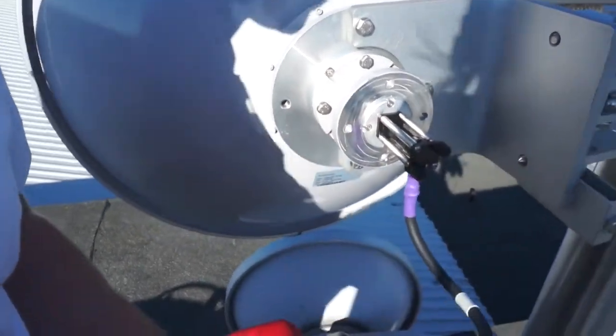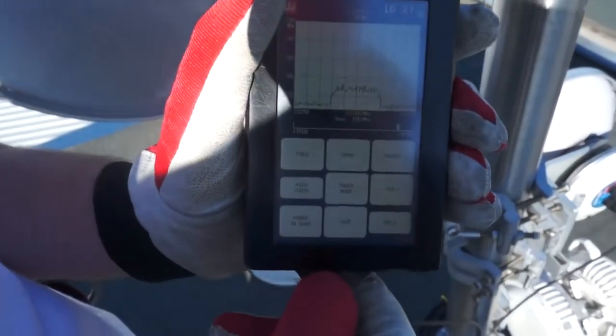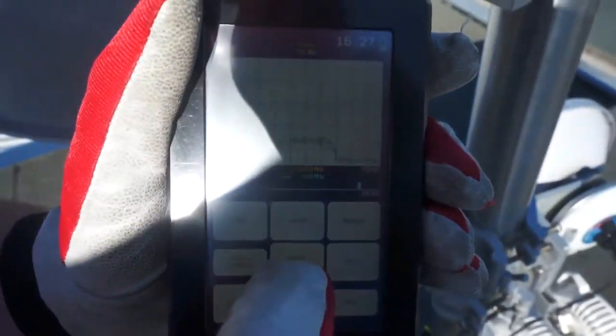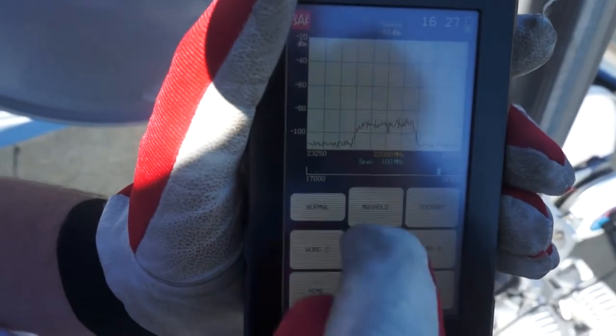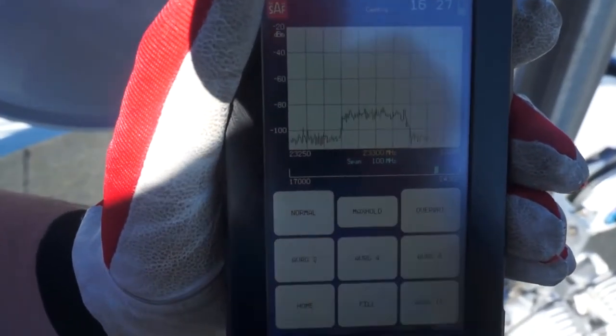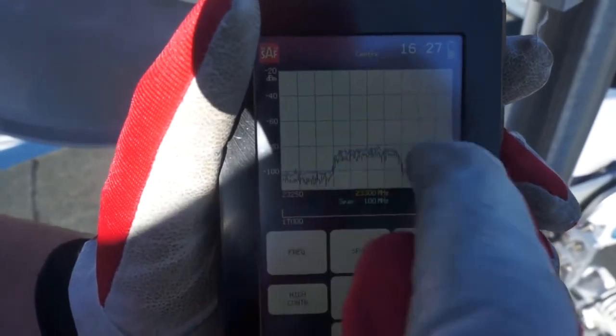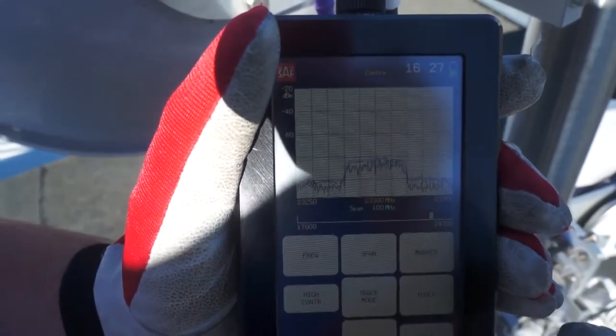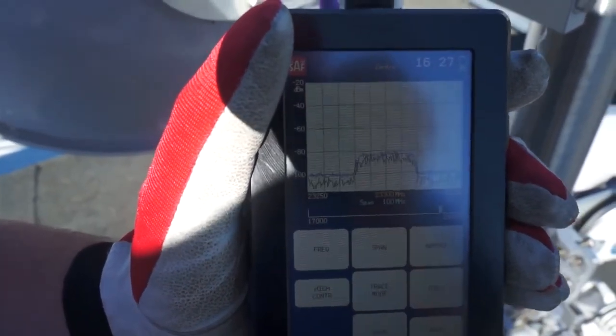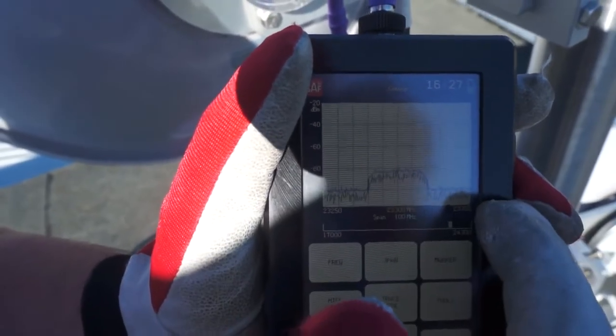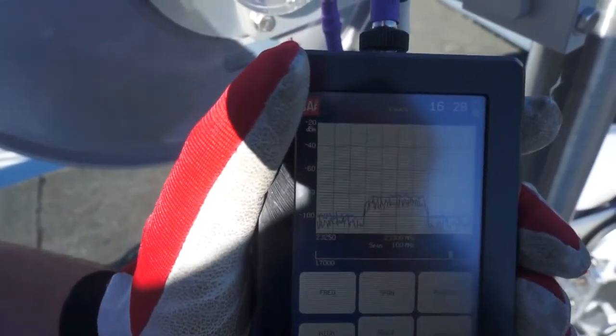All right, now we need to do some basic configuration of the unit before we get started. I'll go to trace mode and use this feature called max hold. Now what max hold adds to the graph is a blue line. And that blue line represents the strongest signal the Spectrum Compact unit has seen along this 100 MHz span while we've been doing an alignment.